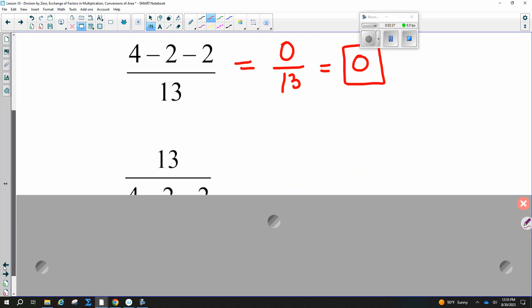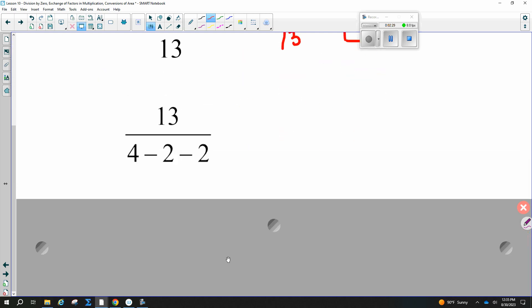And what if I have this? So again, this would be 13 on the top, and now four minus two minus two is zero. What do we write for this one? Yes. And you have to write the whole word. Don't shorten it. Undefined.